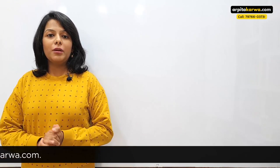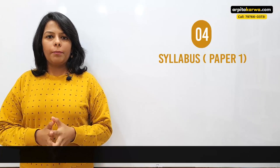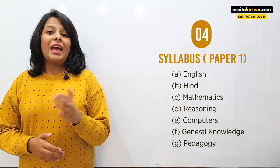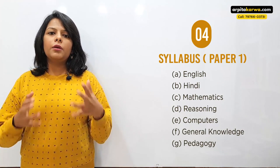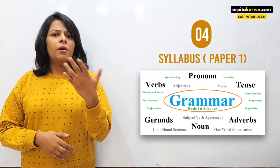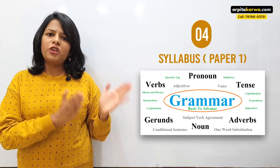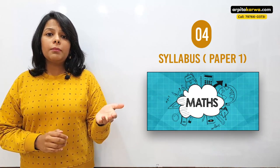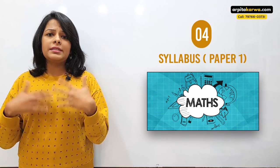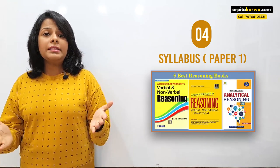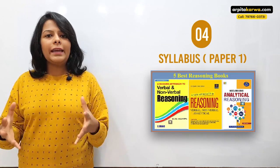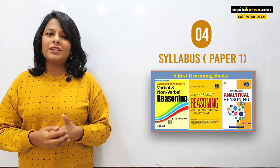The general paper consists of seven topics: General English, General Hindi, Mathematics, Reasoning, Computers, General Knowledge, and Pedagogy. General English and General Hindi cover grammar — antonyms, synonyms, idioms, and phrasal verbs. Mathematics has questions from grades 6 to 8, covering percentages, profit and loss, and fractions. Reasoning questions are straightforward and similar to those in any standard competitive exam book.